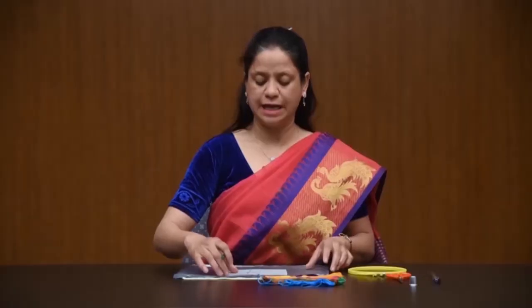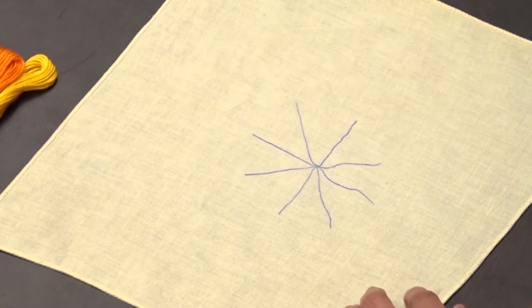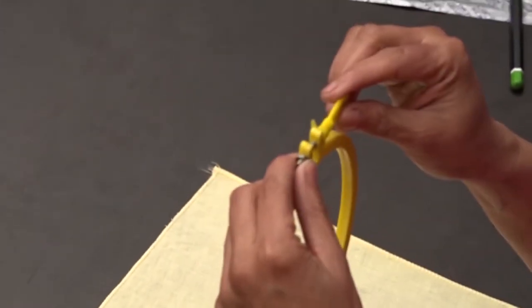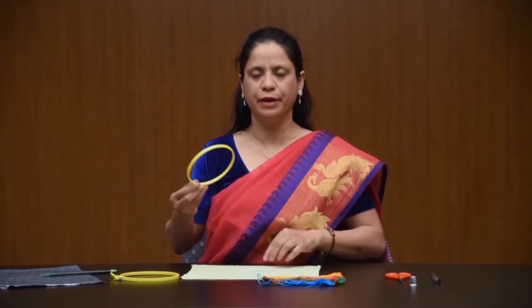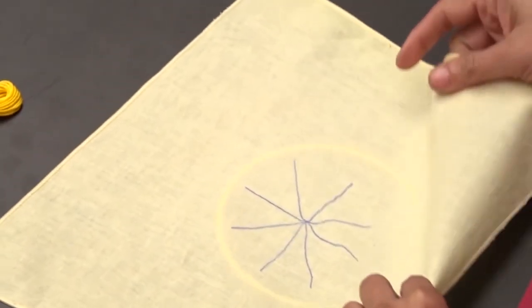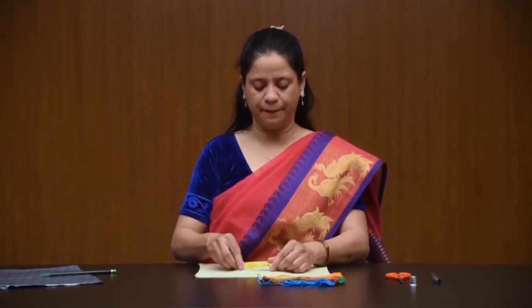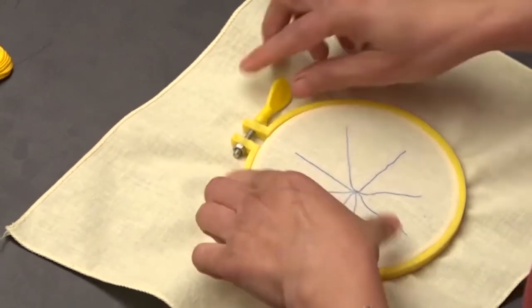Now your design and motif is ready. Fix the traced fabric on the embroidery frame or hoop. To fix it, loosen the screw of the embroidery frame or hoop, separate the rings, place one ring below the fabric and the second ring above the fabric, then tighten the screw.